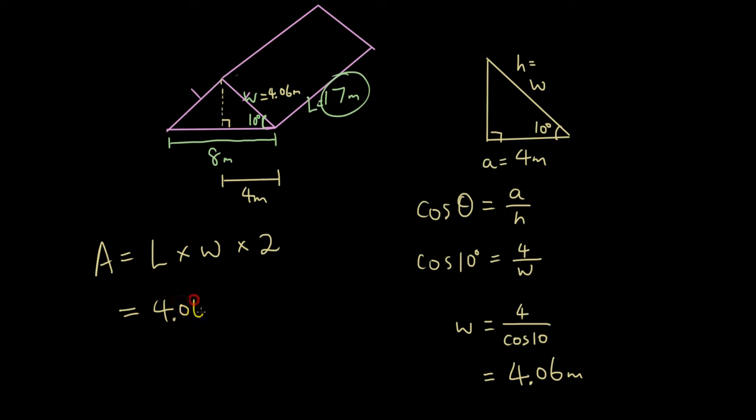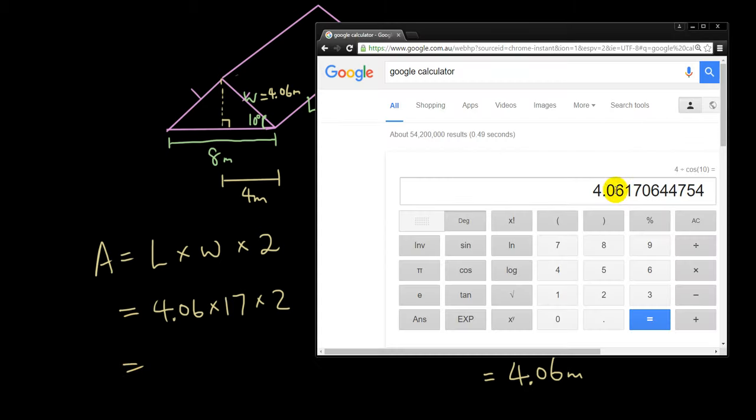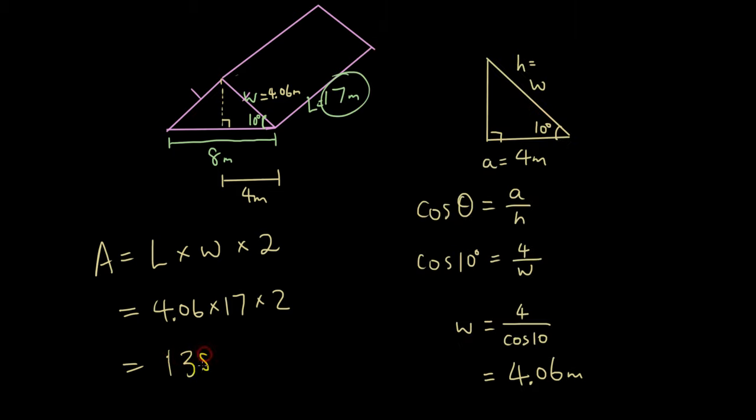So it'll be 4.06 times 17 times 2. And the answer is... So I got 4.06 that I calculated earlier times 17 times 2, and the answer is 138.10 meters squared, rounded to two decimal places.